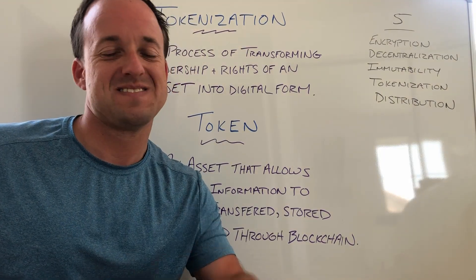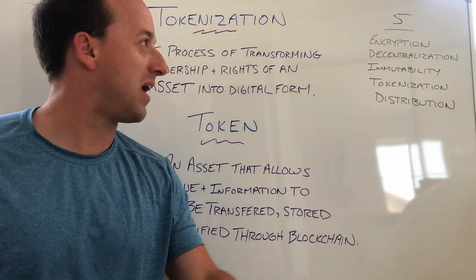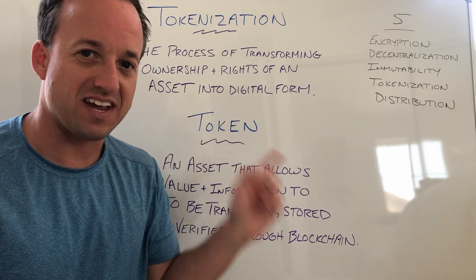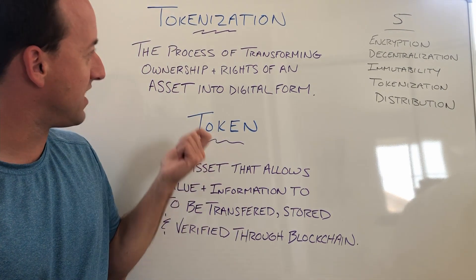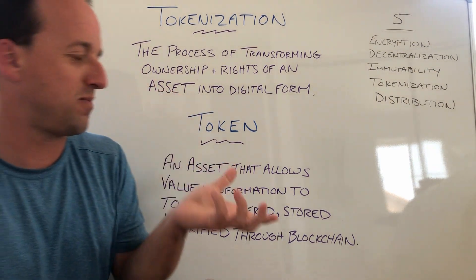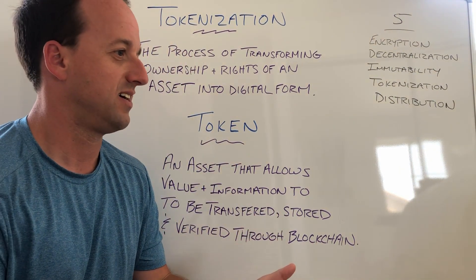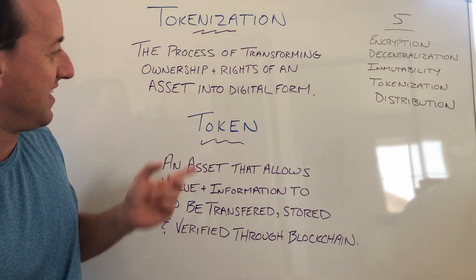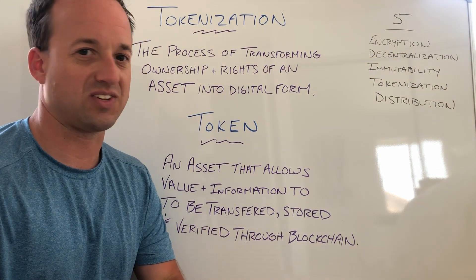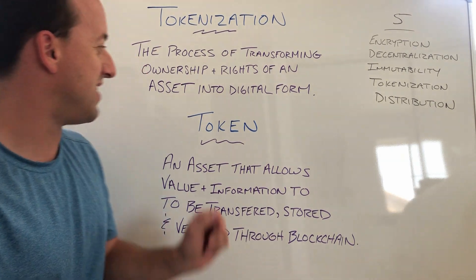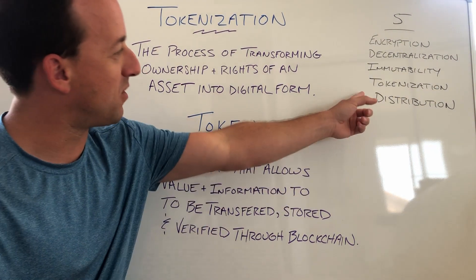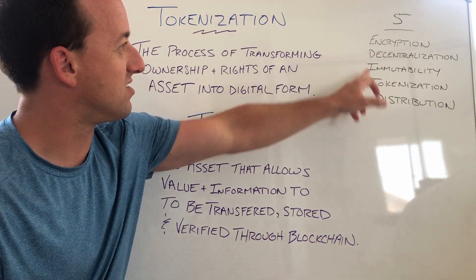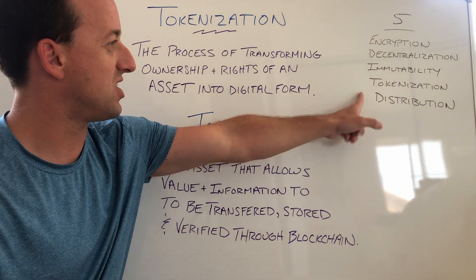What is happening crew? Brent back here with another Blockchain 5. Today we are talking about tokenization. I wrote down how I like to think about it. There are so many different ways to look at tokenization and try to define it, and also different ways to look at tokens for thousands of years now. Again, the Blockchain 5 — we're talking about encryption, decentralization, immutability, tokenization,